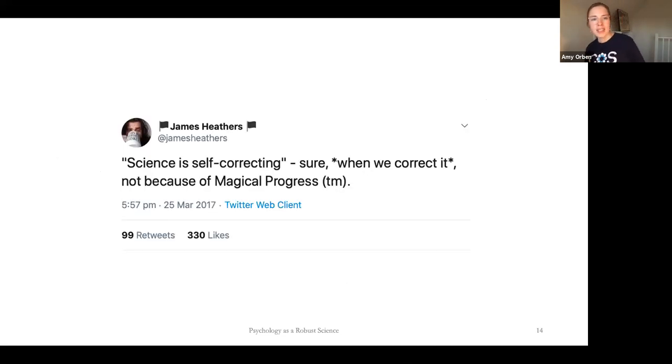And this is a really nice tweet that captures this. I screenshot this in 2017, but that science is self-correcting, sure, when we correct it, not because of a magical process. So what James Heathers is saying here is that we need to make a conscious effort to correct our literature, our work, and others' work. And we shouldn't just assume it's going to happen because of some magical process.